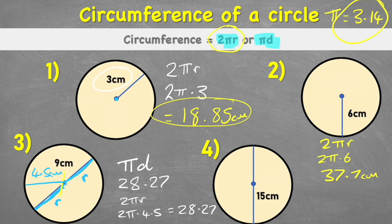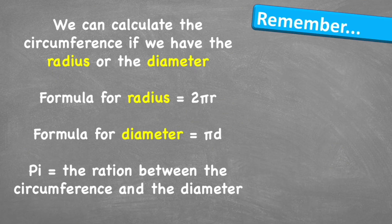For question four, I'll use the diameter formula: πd, or pi times 15. Pi times 15 equals 47.12 centimeters.